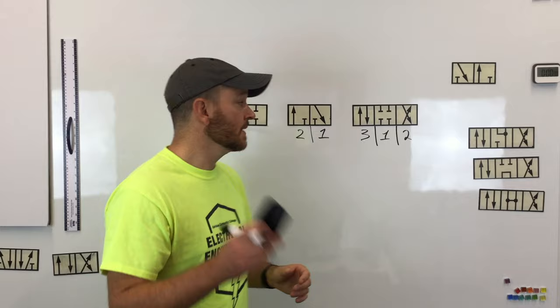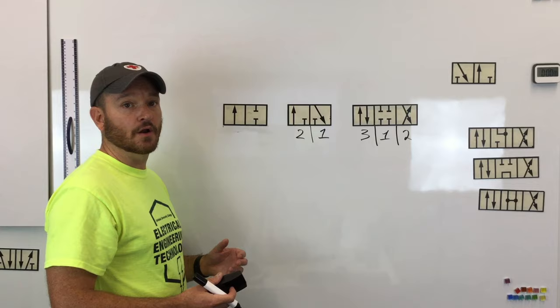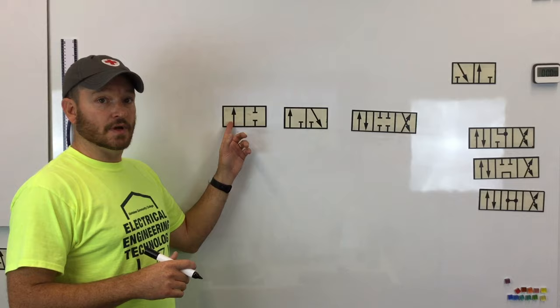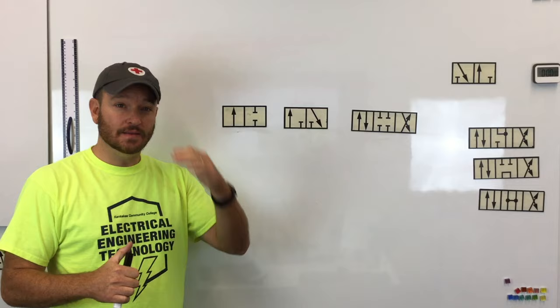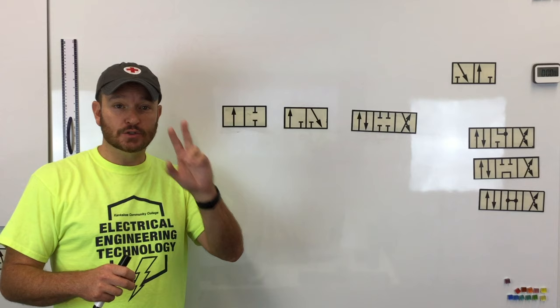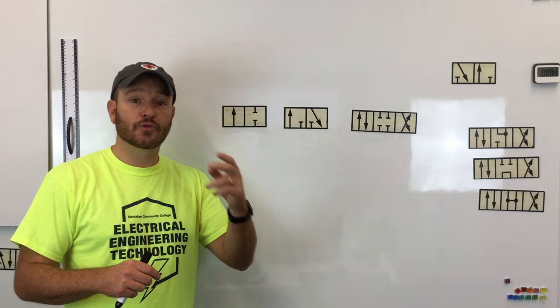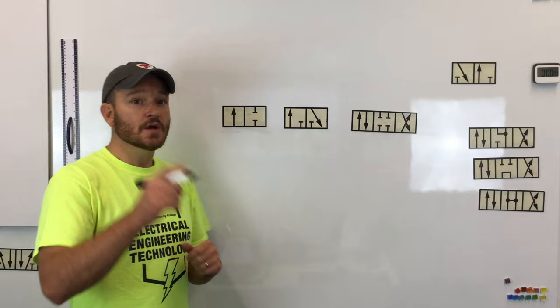Once you've identified the positions, the next thing we need to focus on is the number of ways. A 'way' is a port. So if it's a two-way directional control valve, it has two ports. If it's a three-way directional control valve, it has three ports — three ways means three ports, and so forth.